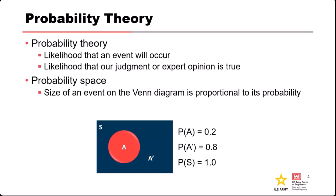It includes things like estimating the likelihood that some event will occur, the likelihood that our opinion or judgment about some condition or event is true, and it also gives us all the calculations we need to combine all these things into a cohesive risk estimate.